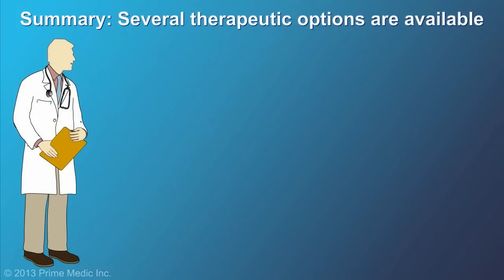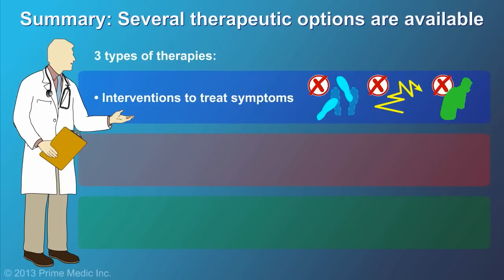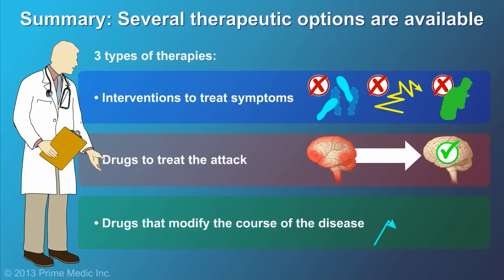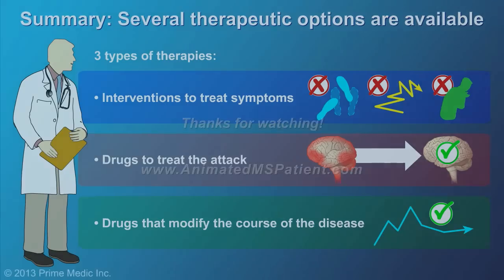In summary, treatments for MS can be categorized into three groups: those that treat symptoms, those that treat the attack, and those that help prevent future attacks and limit disease progression. Several different options are available, and you and your doctor will decide which ones are best for you.